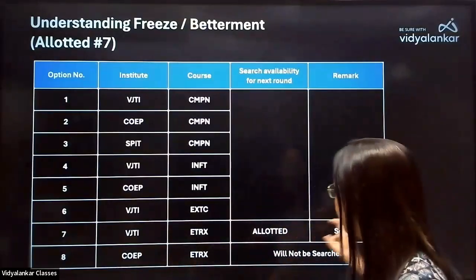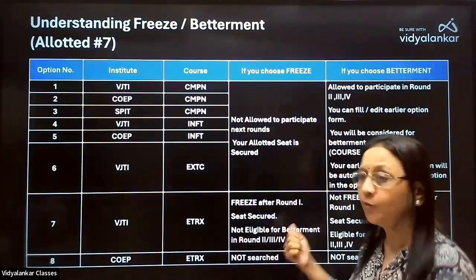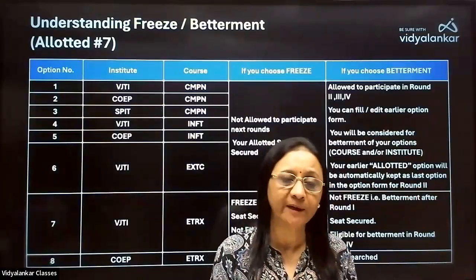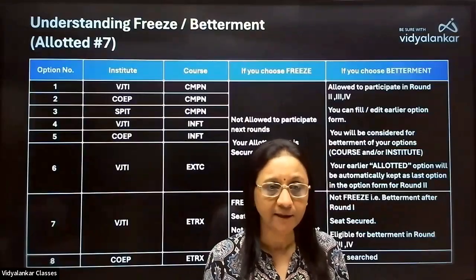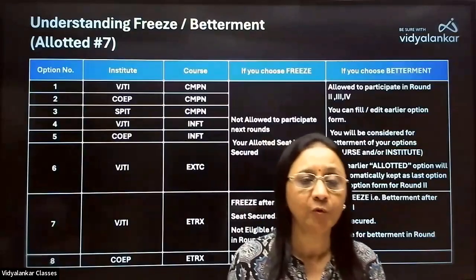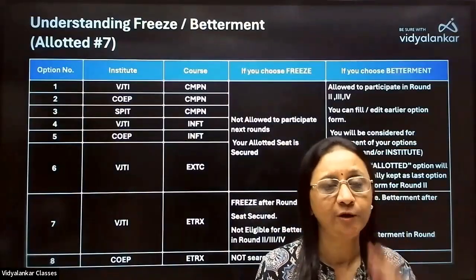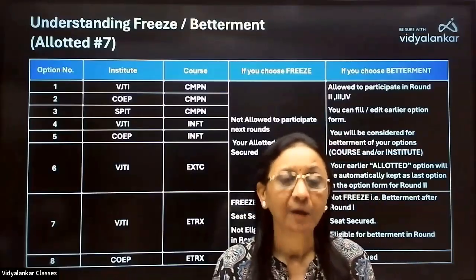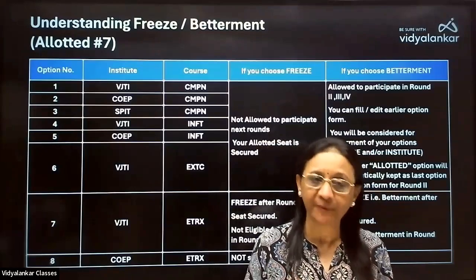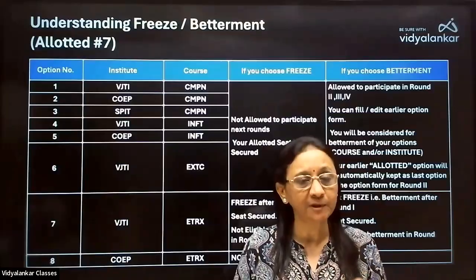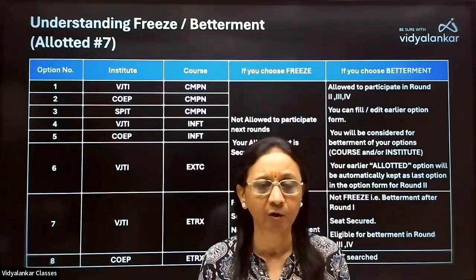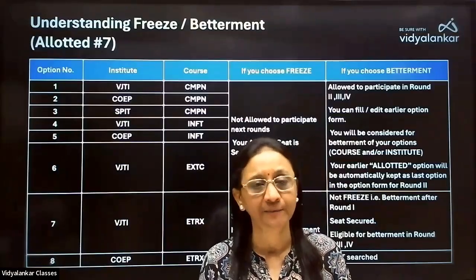So once you get a seat allotted, you have a choice: either freeze it or go for betterment in the next round. If you freeze, you are out of the CAP round but you are happy with your admission. As per the schedule, go to the college, pay your college fees, submit your original documents, and you are done with the admission.